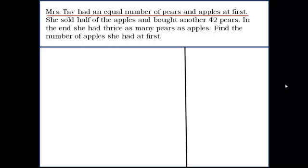So let's draw a model for this. We have pears represented by this box and apples represented by this box. This shows that the number of pears and the number of apples were equal at first.